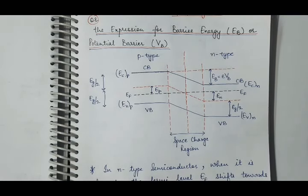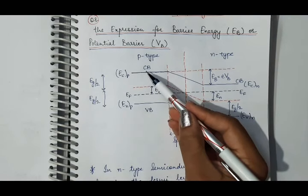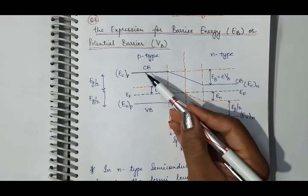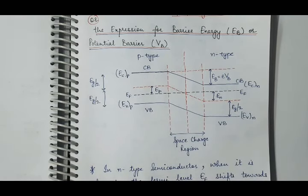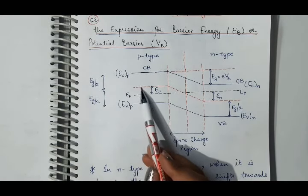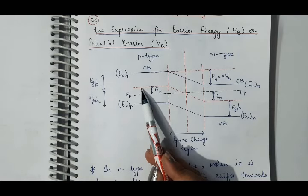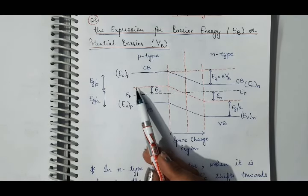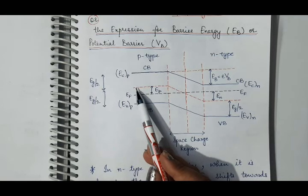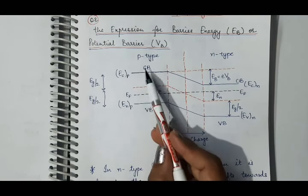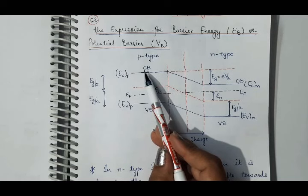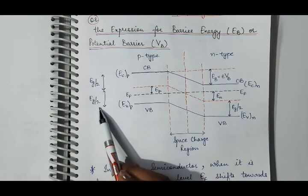The energy gap between the valence band and conduction band is given as EG. In the intrinsic semiconductor, the Fermi level lies in the middle of the conduction and valence bands. Therefore, it divides the whole energy gap between the valence band and conduction band into two halves: EG/2 and EG/2.